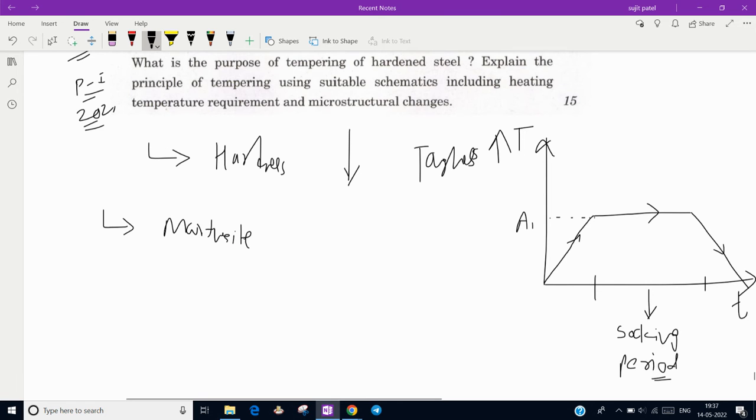If martensite is formed and we do not do subsequent heating or heat treatment, it is in a metastable state and will try to come into the stable phase. Due to this, over a period of time, changes in the dimensions of the product or changes in properties will occur even when that martensite steel is put into service, which will be very dangerous.